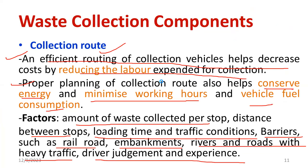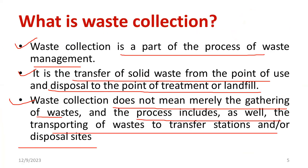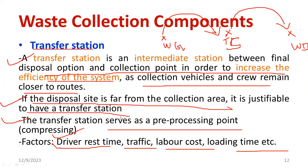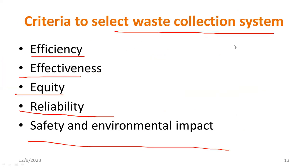In this session, we discussed what waste collection means and its definition. We then discussed the major collection components: collection point, collection frequency, storage containers, collection crew, collection route, and transfer station. We also discussed the major factors to be considered when selecting a waste collection system: efficiency, effectiveness, equity, reliability, safety, and environmental safety. The system should be reliable, not degrading, and we must consider equity, effectiveness, and overall system efficiency.